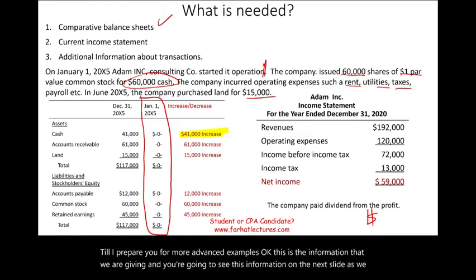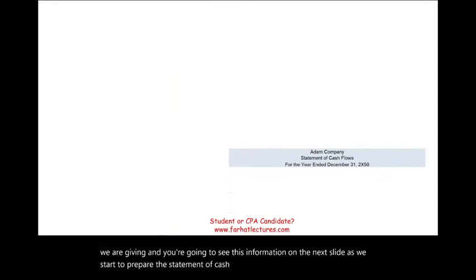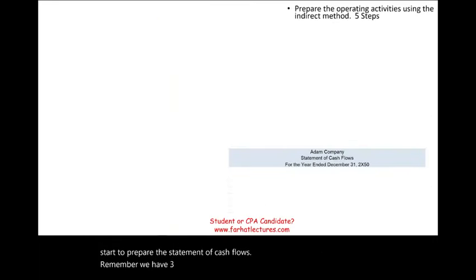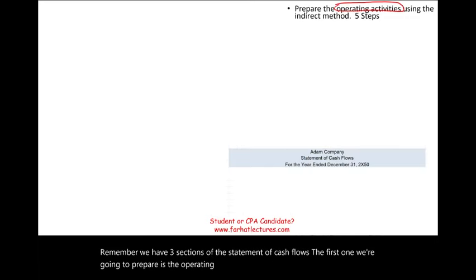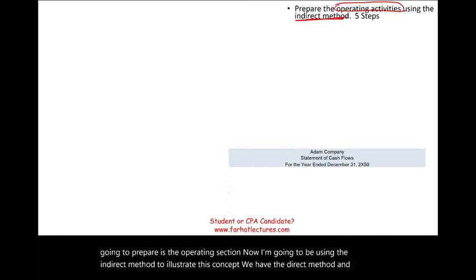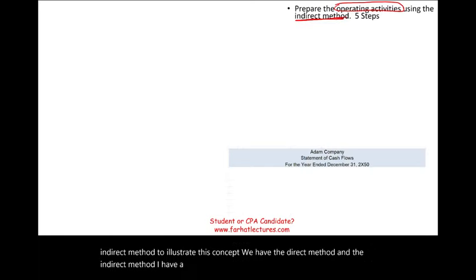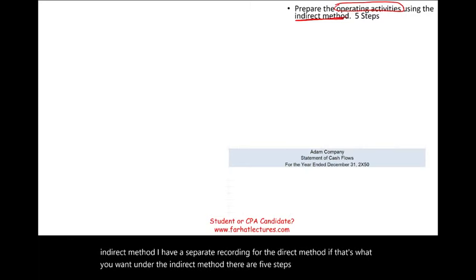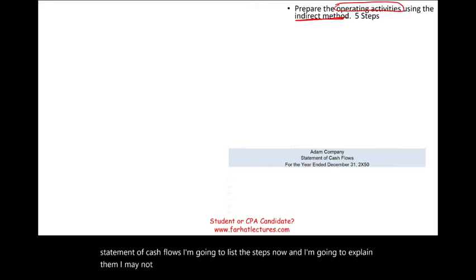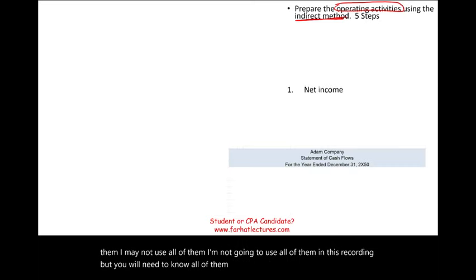We have three sections of the statement of cash flows. The first one we're going to prepare is the operating section, using the indirect method. Under the indirect method, there are five steps in preparing the statement of cash flows. First, you will start with net income — it will be on the income statement or you can derive it from the information given.